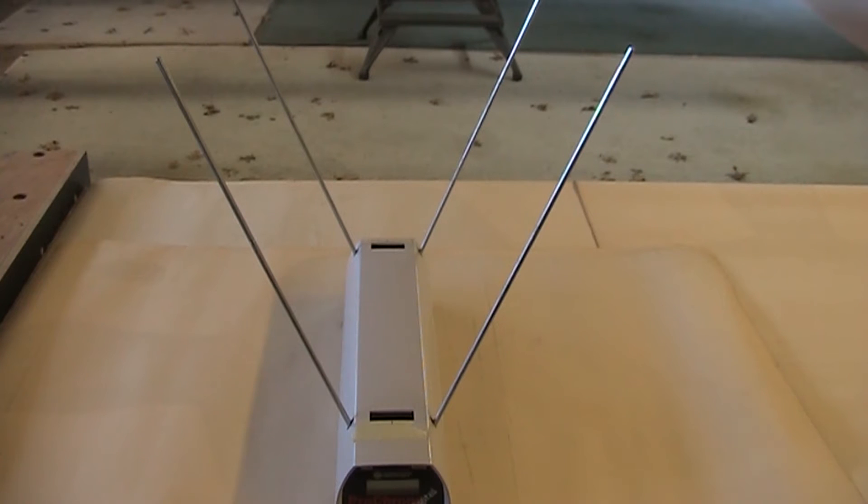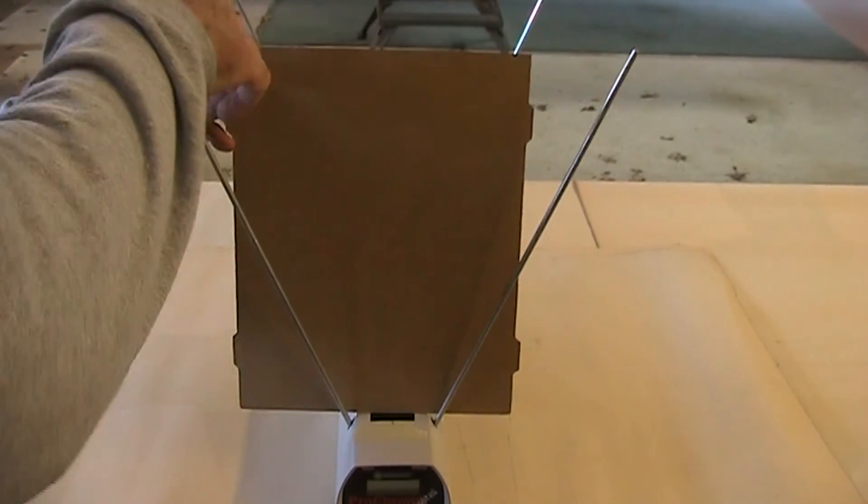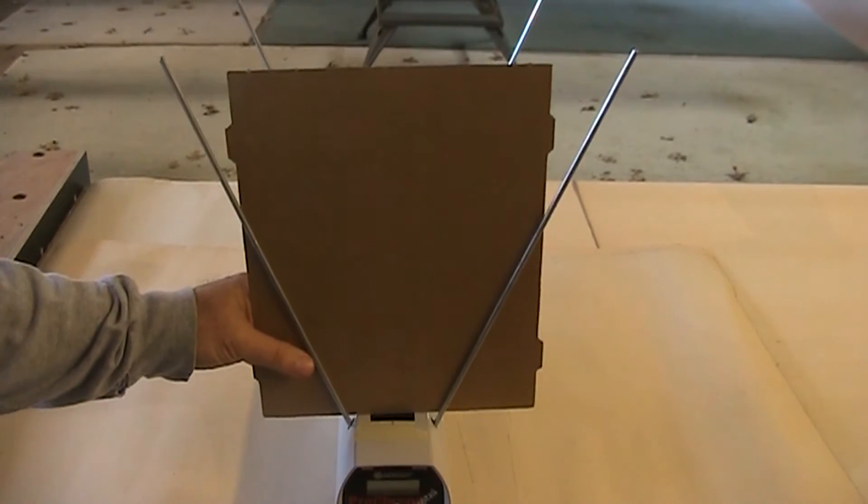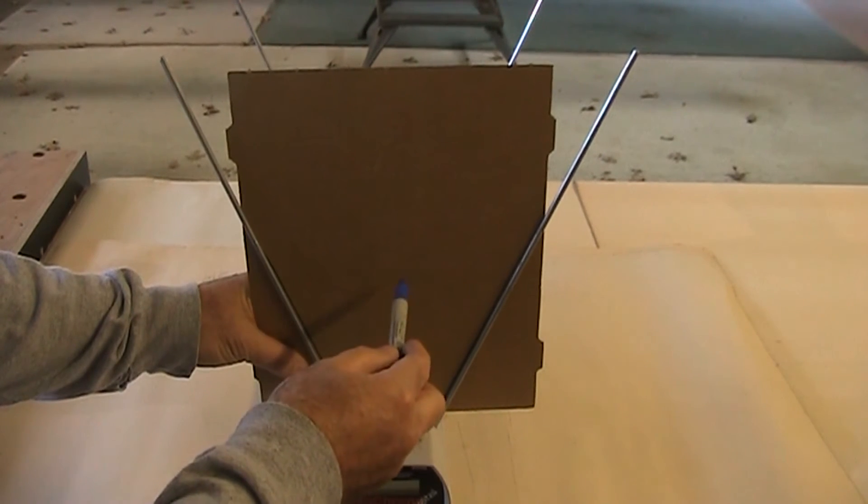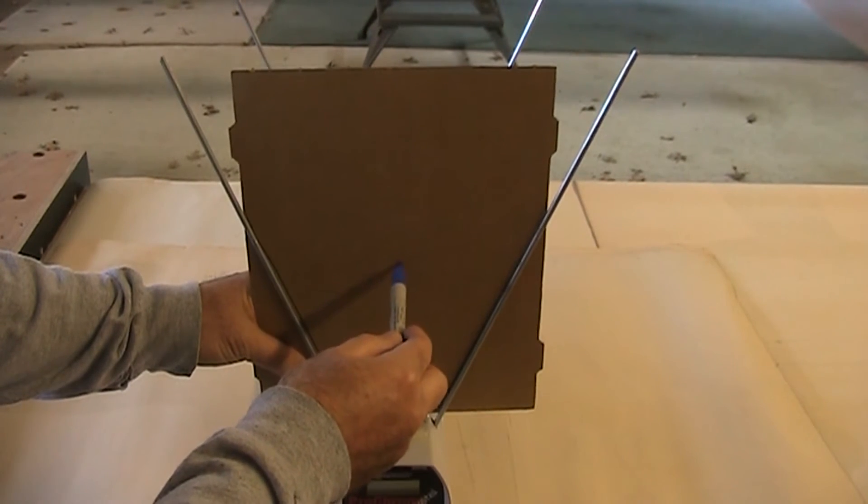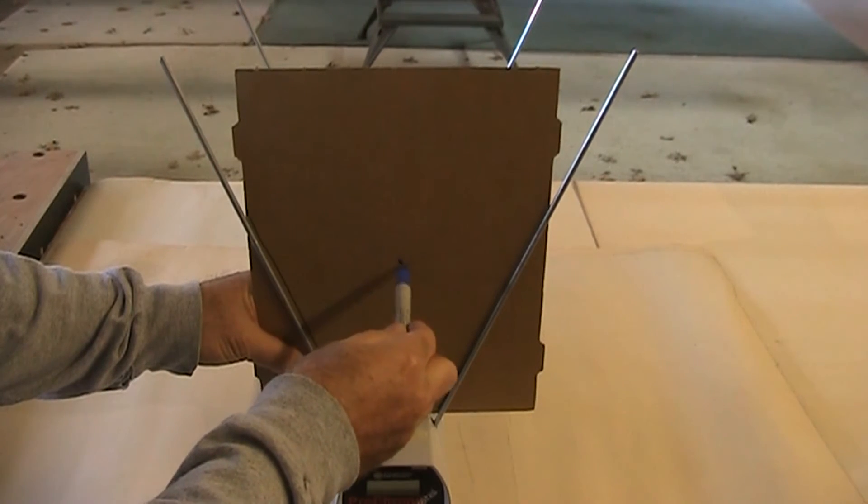The first part of this you can do at home. Set up your chronograph this way and take whatever you're going to write on and put it back behind here. More or less centered. And just draw a couple lines up like that. And this one works pretty well right about in the middle. That's all you need.